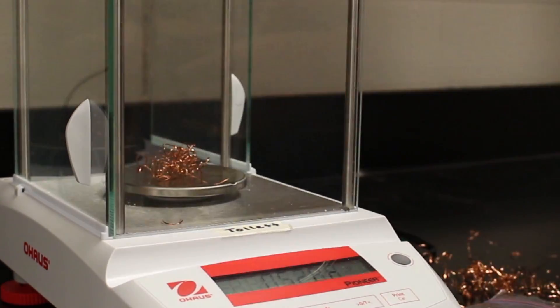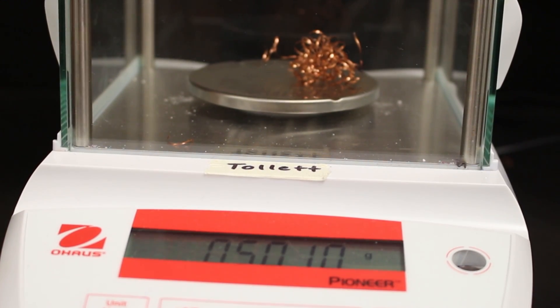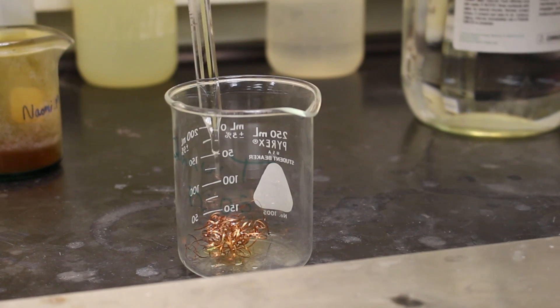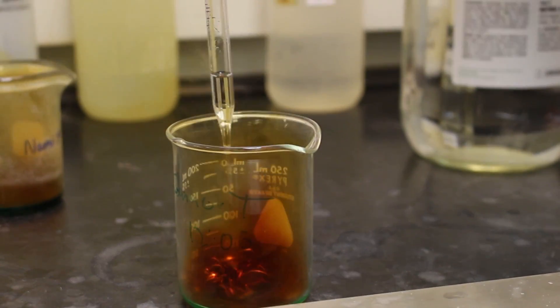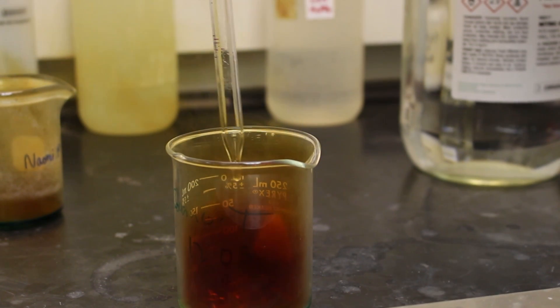We measured approximately half a gram of copper turnings. We put the copper in a 250 milliliter beaker and added 5 milliliters of concentrated nitric acid.